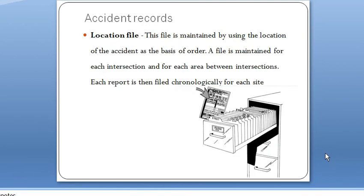Next is accident records - the data collected is to be kept in different forms of records. The first form is the location file. This file is maintained using the location of accident as the basis of order. A file is maintained for each intersection and for each area between intersections, and each report is filed chronologically for each site.